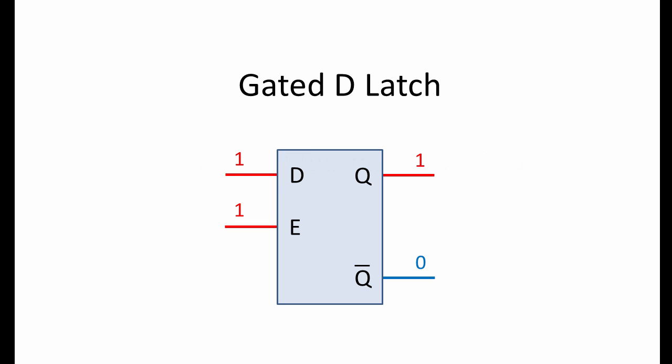A gated D-latch is a 1-bit memory device. The D stands for data. A gated D-latch is also referred to as a data latch or simply a D-latch. We're going to look at how a D-latch can be built from a gated SR latch and examine its behavior with a timing diagram.